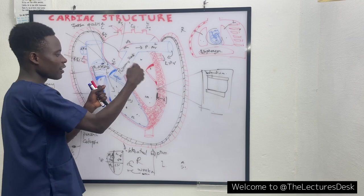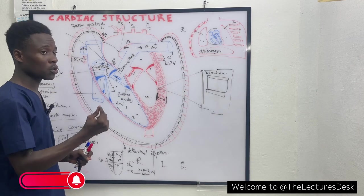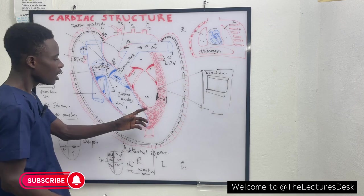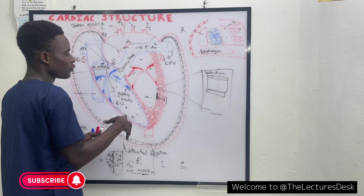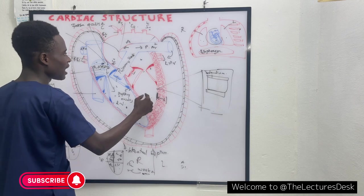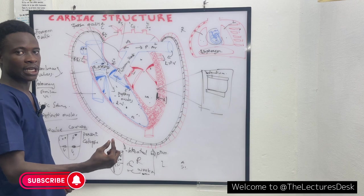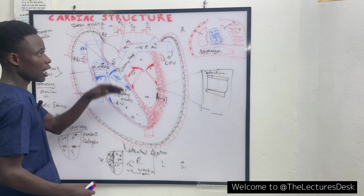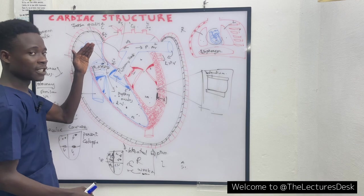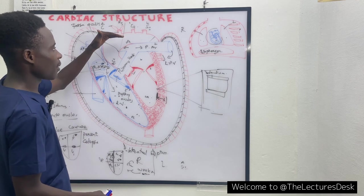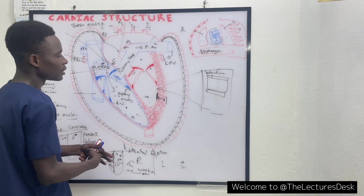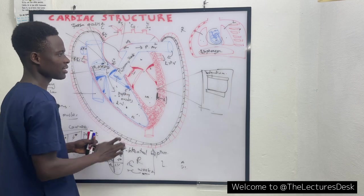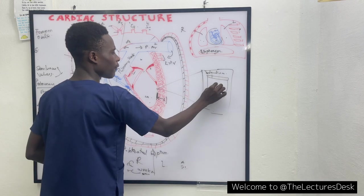An important function of the endocardium is that it prevents blood clotting inside the heart. When blood clots in the heart, it can be pumped alongside normal blood, and when it reaches small arteries it blocks them, preventing blood flow. This can cause ischemic stroke in the brain and can also affect the lungs. The endocardium prevents the blood circulating in the heart from clotting.